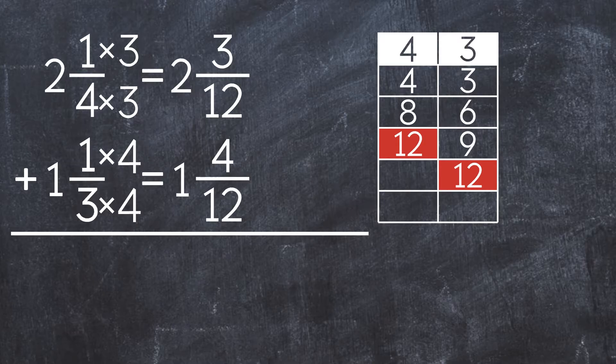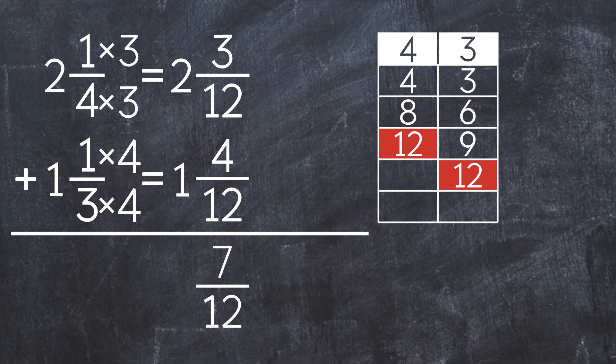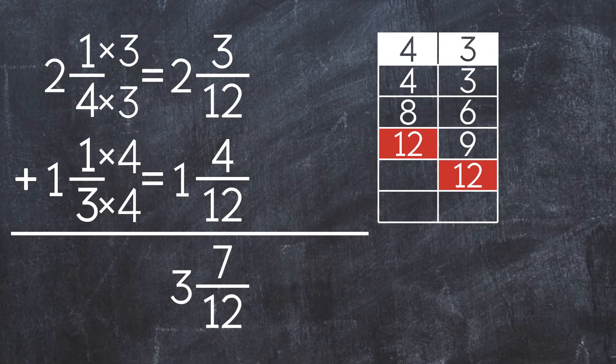Now we can add. First, we add the fractions: 3 twelfths plus 4 twelfths equals 7 twelfths. Next, we add the whole numbers: 2 plus 1 equals 3. So the final answer is 3 and 7 twelfths.